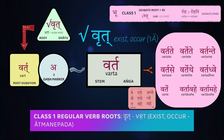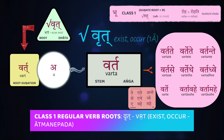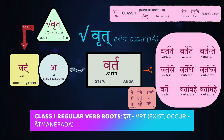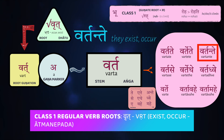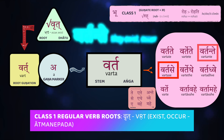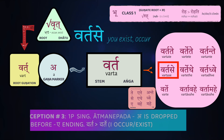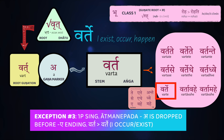On the ātmanepada side, we can look at the verb vṛt, which means 'to exist or occur.' This will first guṇate and become vart, and then you add an 'a' marker to form your stem varta. Now you add your ātmanepada regular endings: tat vartate, 'that happens' or 'that exists'; te vartante, 'they exist, they occur'; tvaṃ vartase, 'you exist'; ahaṃ varte, 'I exist.'